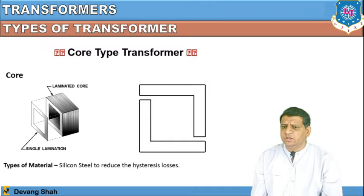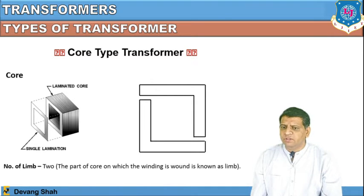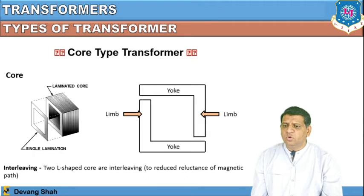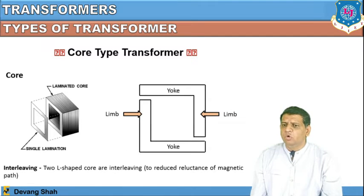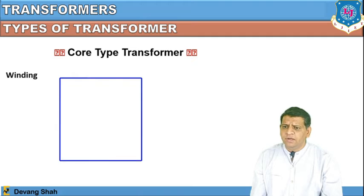The core is made of silicon steel to reduce hysteresis loss, and is square and laminated to reduce eddy current loss. There are two limbs — the part of the core on which the winding is wound — and two yokes — the part of the core that joins the two limbs. Two L-shaped core sections are interleaved to reduce the reluctance of the magnetic path, and multiple staples are connected together to construct the core.